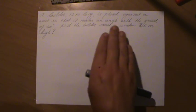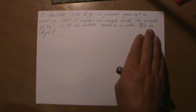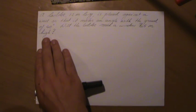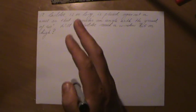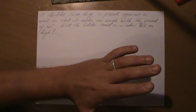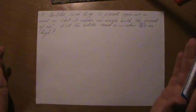Will the ladder reach a window 8.5 meters high? So if I just summarize the question again, we have a ladder, it's placed against a wall, this ladder is 12 meters long and it makes an angle of 40 degrees.